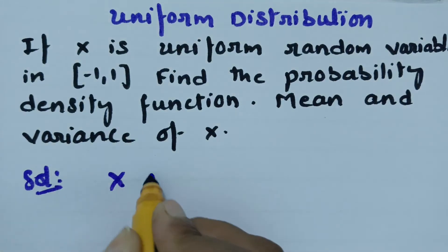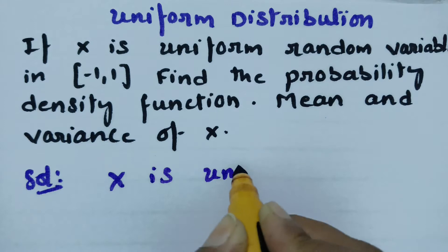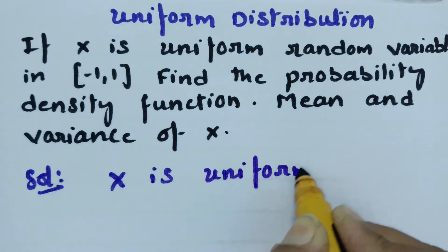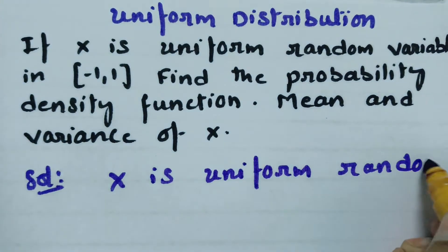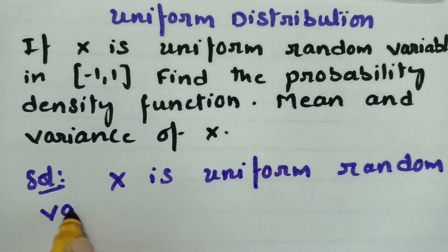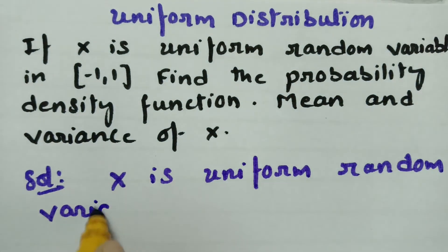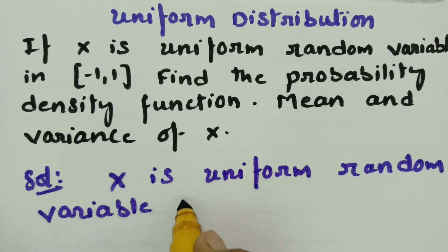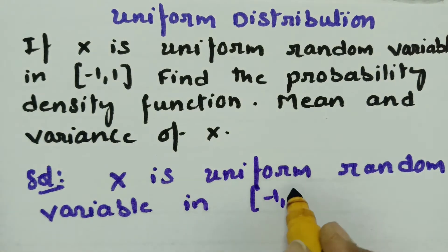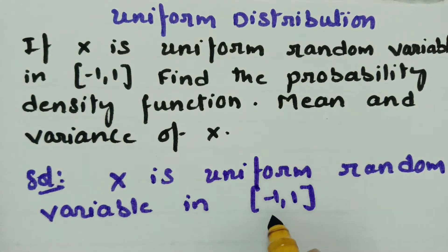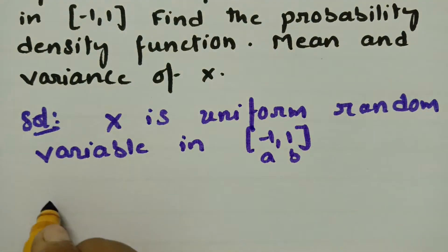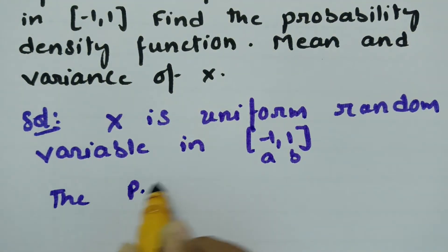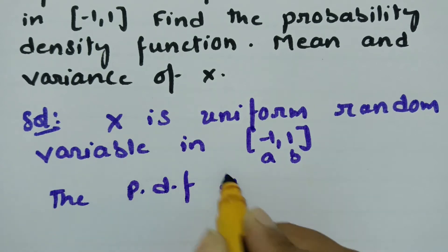x is given as a uniform random variable in minus 1 comma 1. Here a is equal to minus 1 and b is equal to 1, and therefore the probability density function is given as follows.